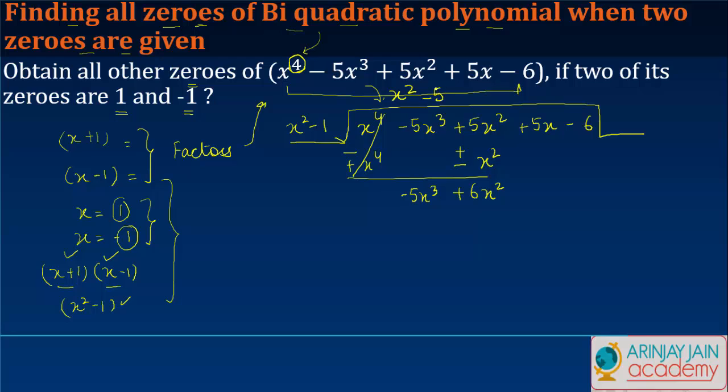Now I multiply this by -5x because -5x times x^2 gives me -5x^3 and -5x times -1 gives me +5x. I will also bring down this 5x here.